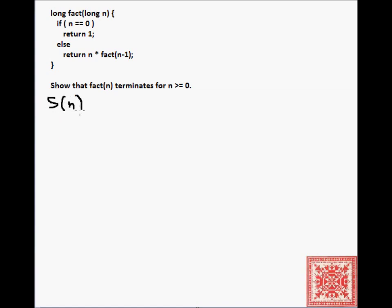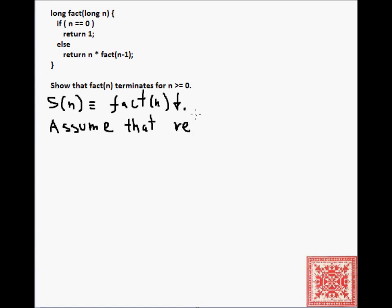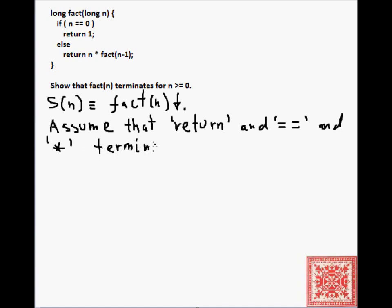The inductive statement is that S of n means fact of n terminates. We will assume that return terminates, that multiplication terminates, that subtraction terminates, and that the equality Boolean operation also terminates — all those primitive operations run and terminate in a finite number of steps.